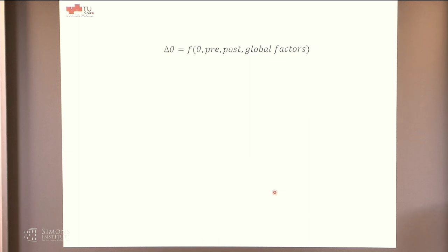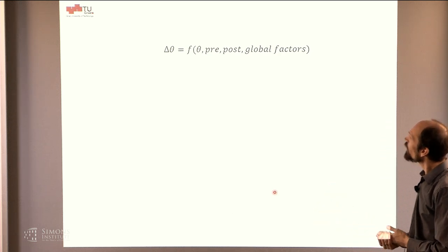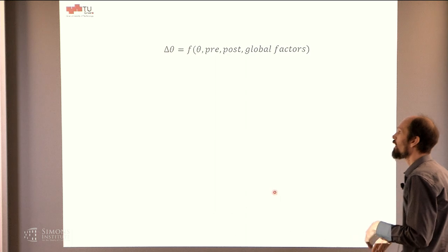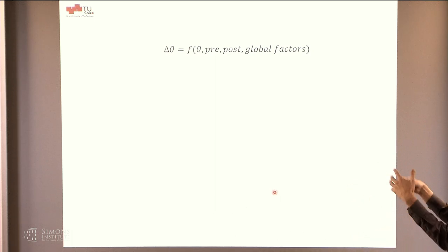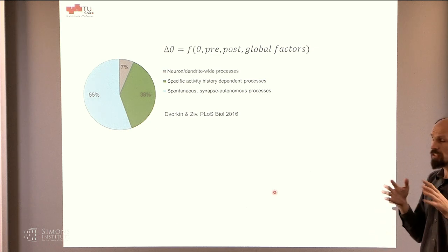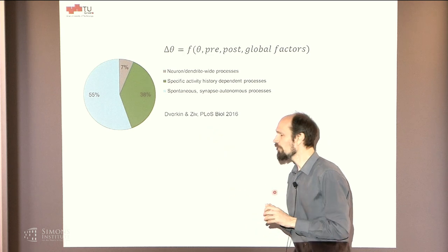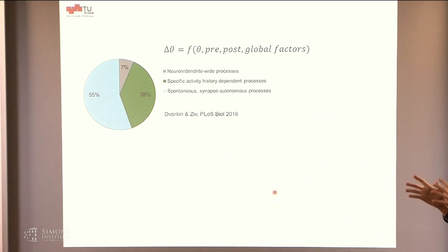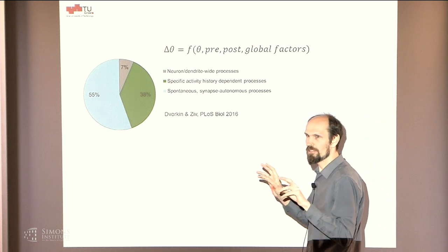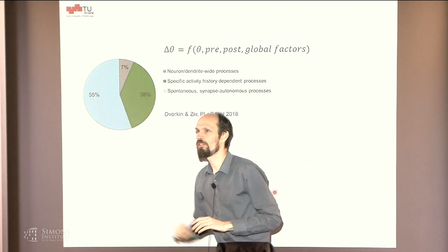The second observation is about plasticity. From a theoretical point of view, we often write plasticity as a deterministic function: the change of a synaptic parameter delta-theta as a function of the parameter itself, pre- and post-synaptic variables, and possibly global factors. The surprising fact is that synaptic dynamics in the brain are actually to a large extent stochastic. Work by Dworkin and Sif estimated how much of the synaptic dynamics can be attributed to pre- and post-synaptic history-dependent processes — and presumably more than 50 percent cannot be explained this way and is stochastic.